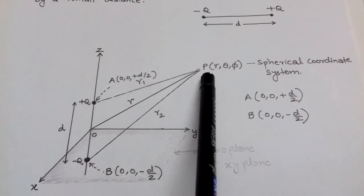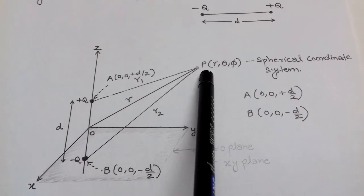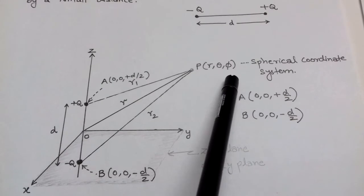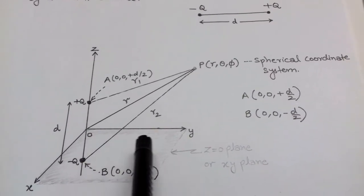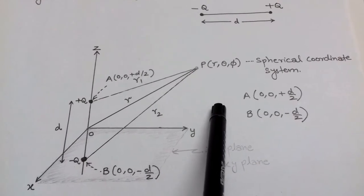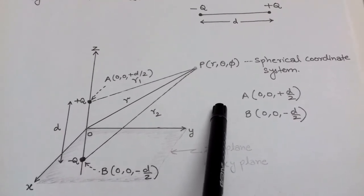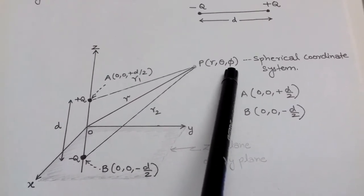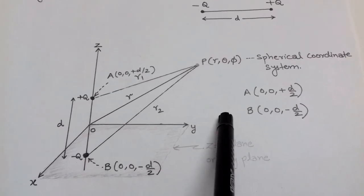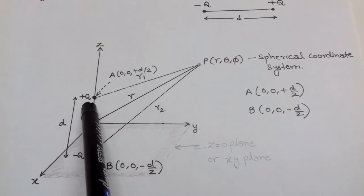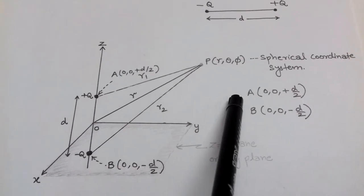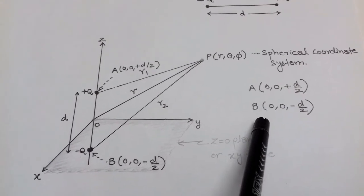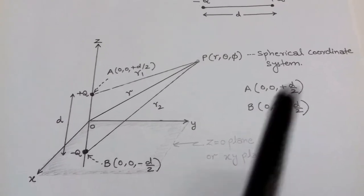Our task is to determine the electric potential at some point P. We consider a spherical coordinate system because the electric dipole is spherically symmetric. Point P has coordinates (r, θ, φ). The plus q charge is at point A with coordinates (0, 0, +d/2), and minus q is at point B with coordinates (0, 0, −d/2).